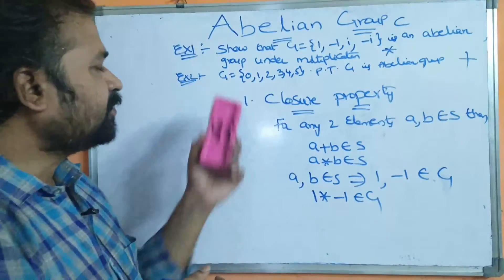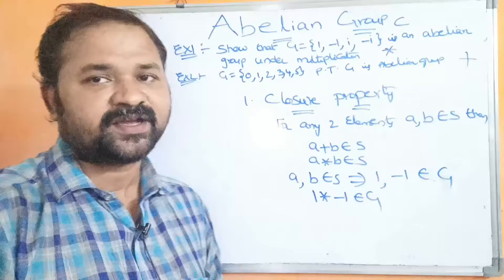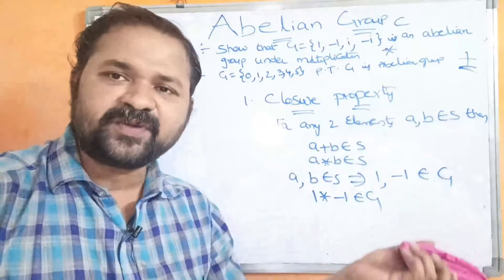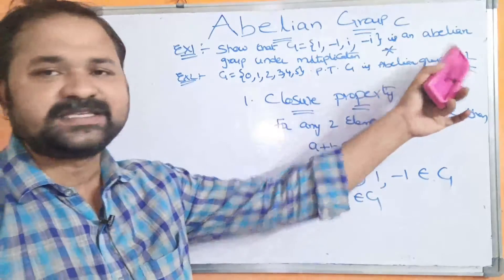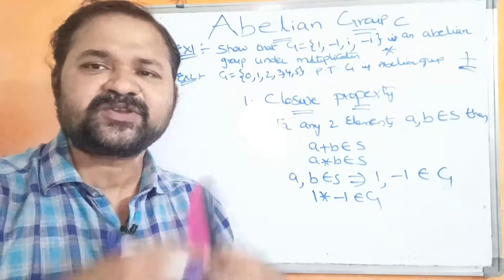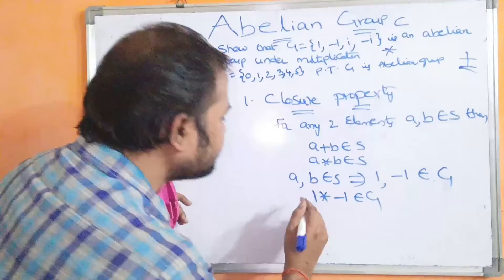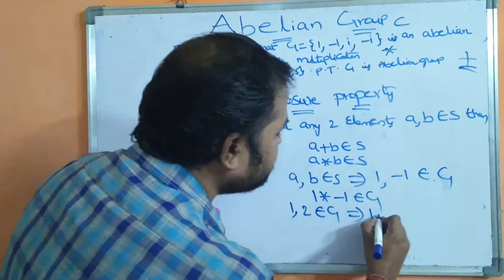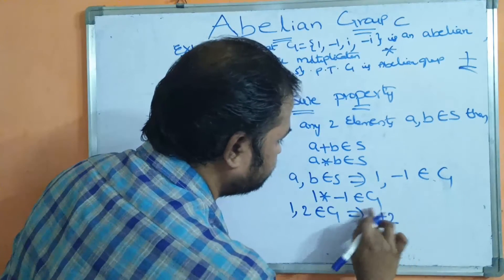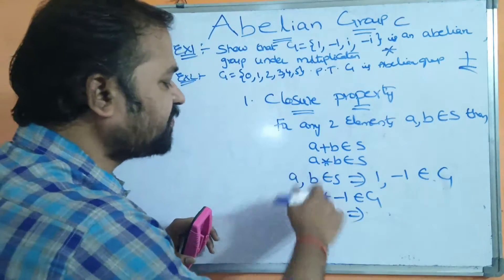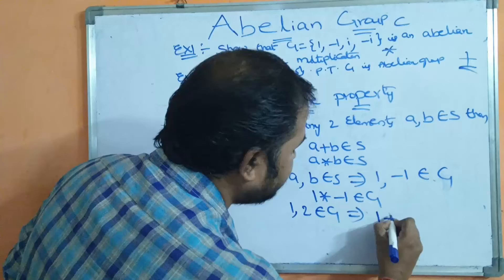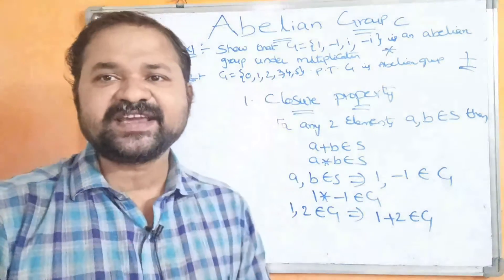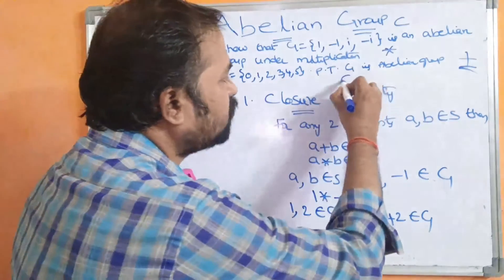For Example 2, we can take any two elements from the set. Here we are doing the operation with respect to plus. Let A = 1, B = 2, so 1 and 2 belong to G. 1 + 2 = 3, and 3 is present in the group, so we can say that this problem also satisfies closure property.